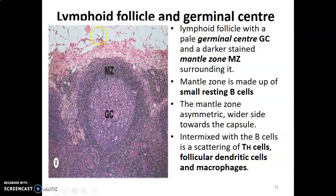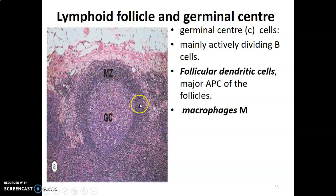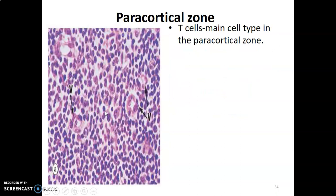The germinal center is pale-staining and the mantle zone is dark-staining, forming the outer portion of the follicle. The mantle zone contains small resting B cells and is wider towards the capsule. Actively dividing B cells are in the germinal center, together with follicular dendritic cells, antigen-presenting cells, and macrophages. The paracortical zone has no lymphoid follicles and is populated by T cells.